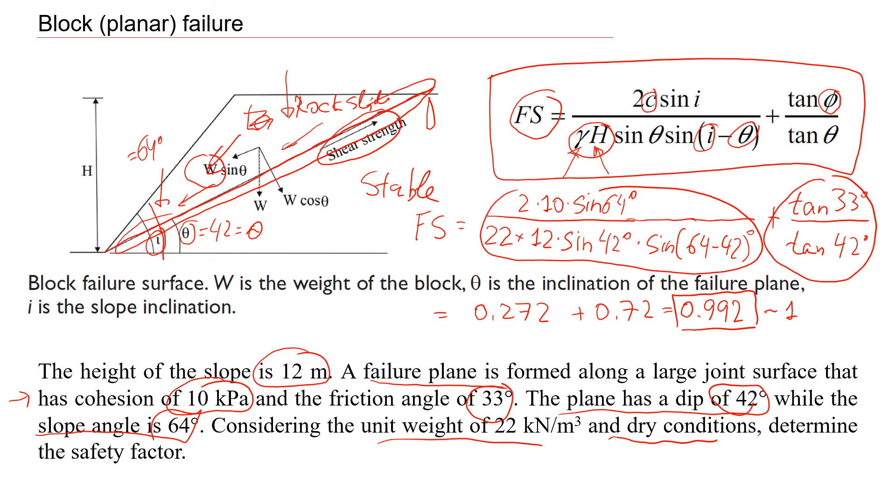Another thing that I would like to discuss here is the effect of cohesion. If we have cohesion equal to 0, we see that this component will be gone. And if the cohesion is gone, then safety factor will become equal only 0.72. This one is unstable. When it's unstable, this means that we can expect some movement or even a failure.